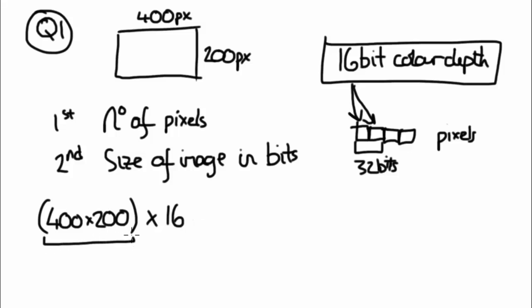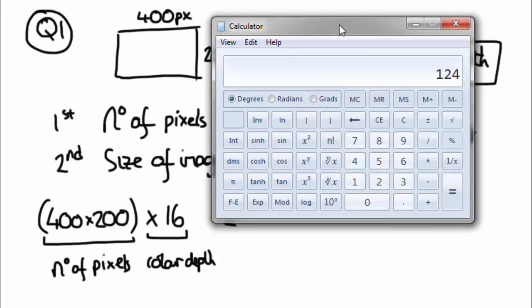So that would give you number of pixels, and you'd get a mark for that bit. And then this is your color depth. Okay, and then what would happen, obviously you'd have your calculator.